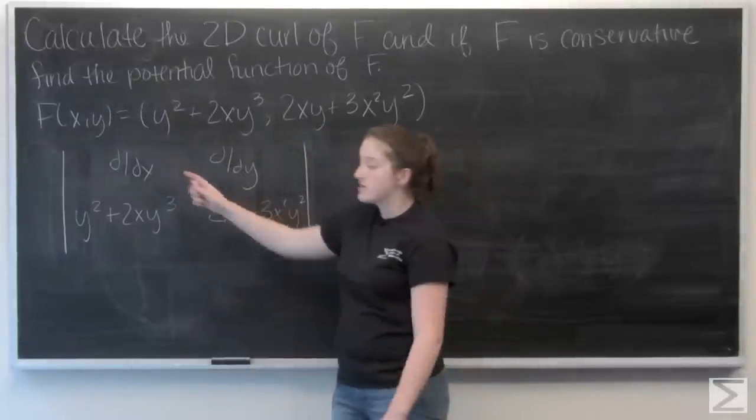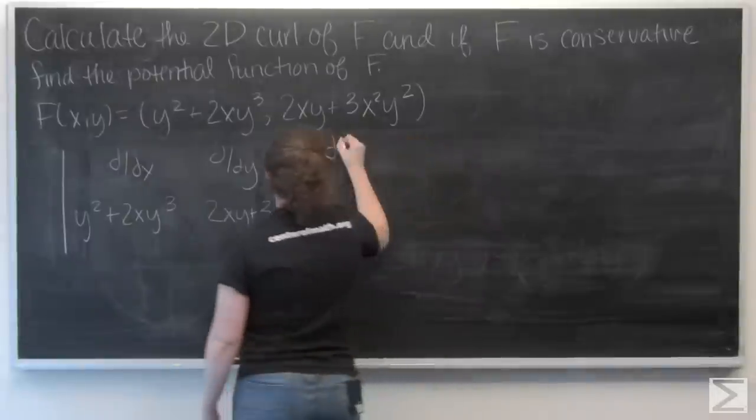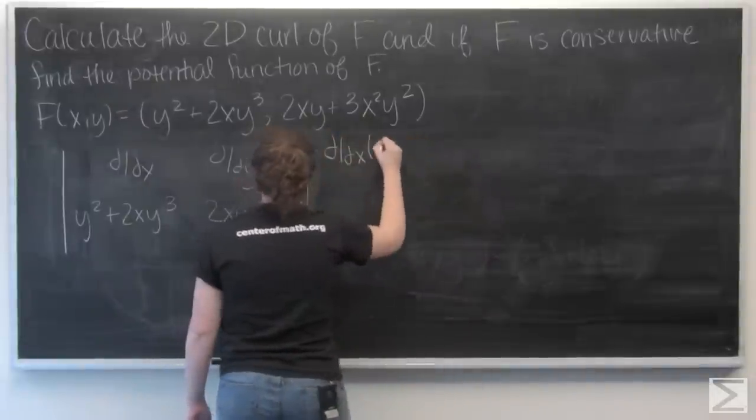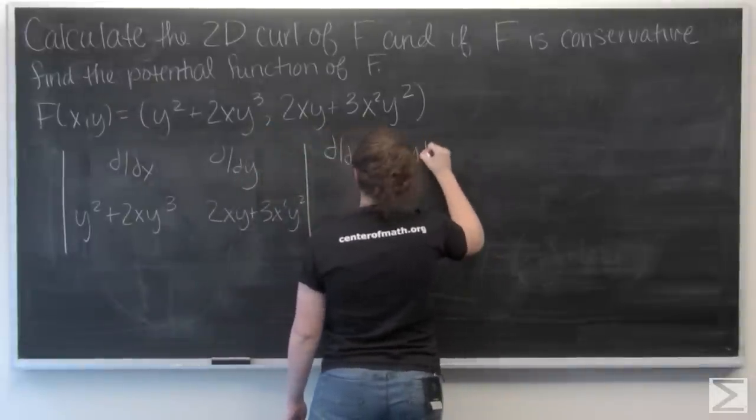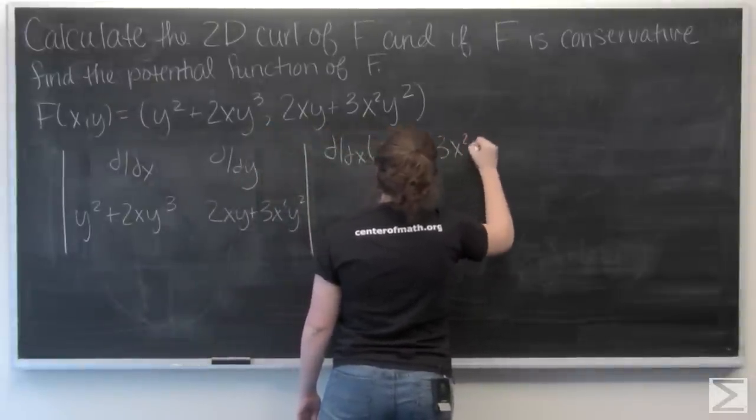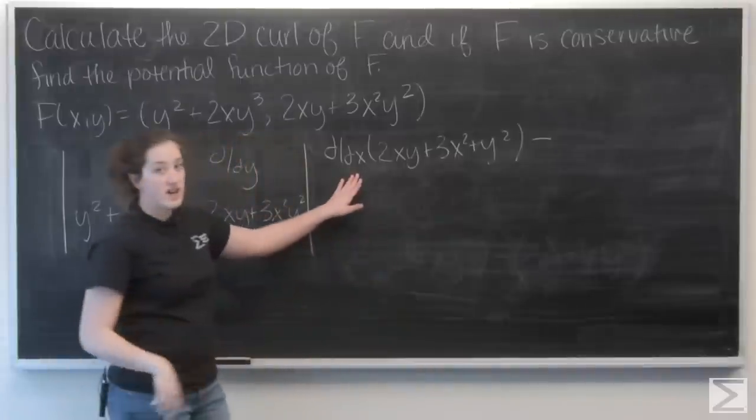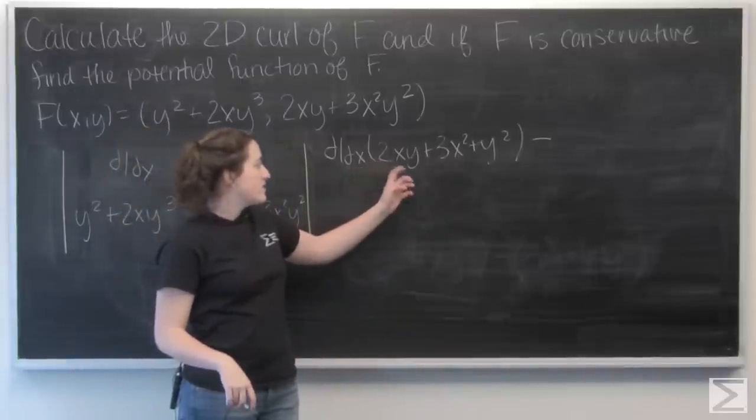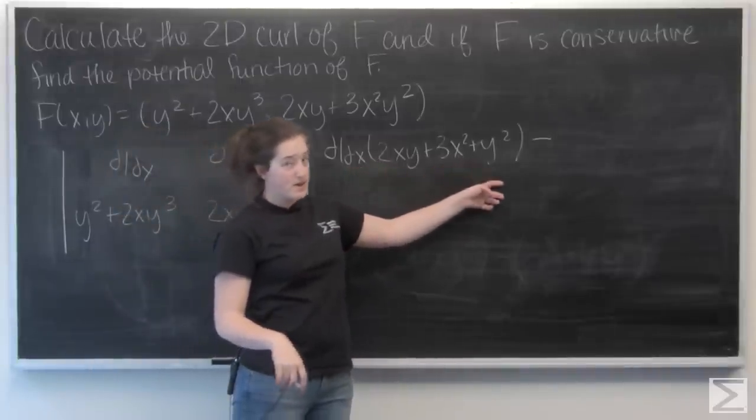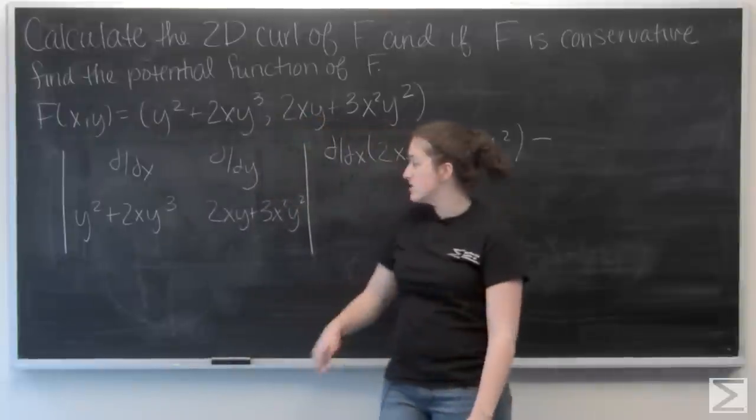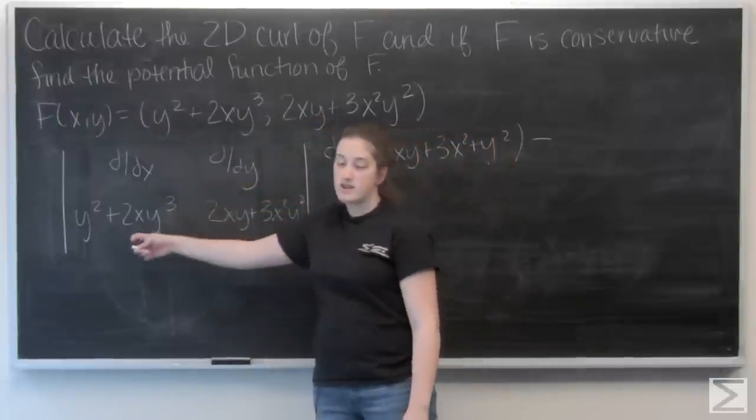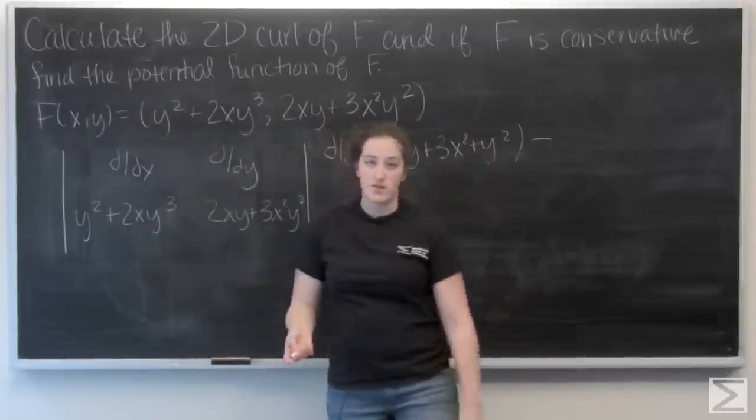I want to multiply along the main diagonal. So d/dx times quantity 2xy plus 3x squared y squared, and then I'm going to subtract the other diagonal: d/dy times y squared plus 2xy cubed.